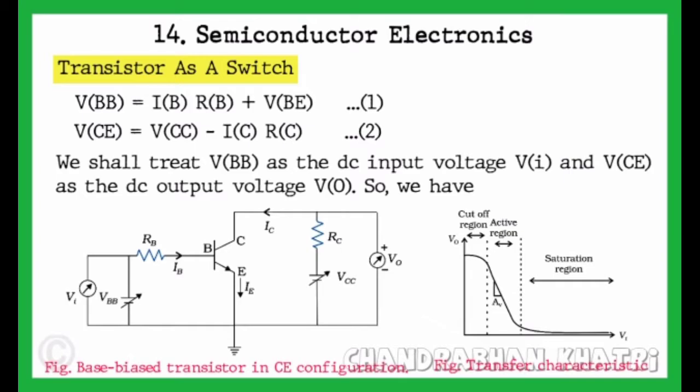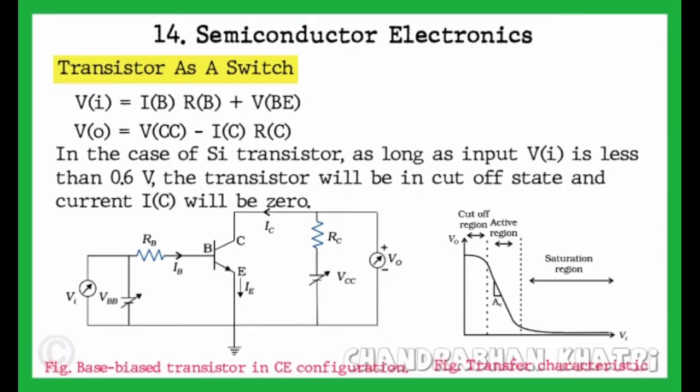We shall treat VBB as the DC input voltage VI and VCE as the DC output voltage V0. So we have VI equals IB into RB plus VBE, and output voltage V0 equals VCC minus IC into RC.